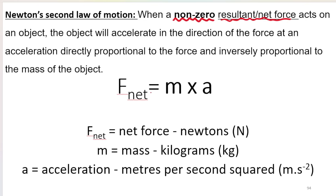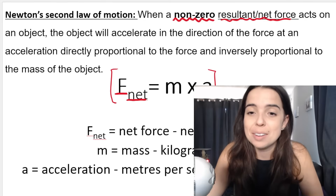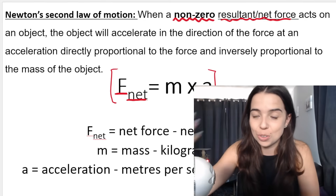If you leave out important words such as 'non-zero' or 'resultant or net force' — say for example you say 'when a force acts on an object' — you can get zero for your definition because you have to say a non-zero resultant or net force. Looking at the formula, it's not force equals mass times acceleration, it's net force equals mass times acceleration. You have to say non-zero because if net force equals zero, that's Newton's first law of motion. So please study the correct definition as given by your exam guidelines.